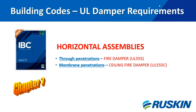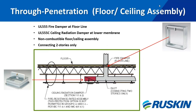For building codes regarding horizontal assemblies, this is where many people get confused about what type of damper can be used. For through-penetrations, depending upon the occupancy type and how many stories the building is, you may only need a fire damper in the assembly, or you may need to build a fire-rated shaft. If the shaft wall is penetrated, then the shaft wall is to be penetrated with a fire damper and/or FSD. If there is a membrane penetration only, ceiling fire dampers and ceiling radiation dampers apply.